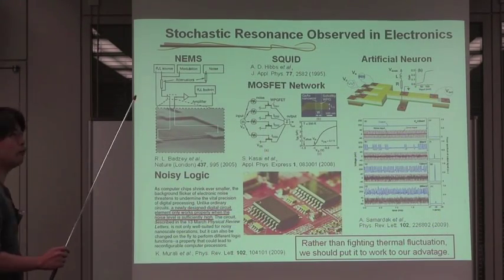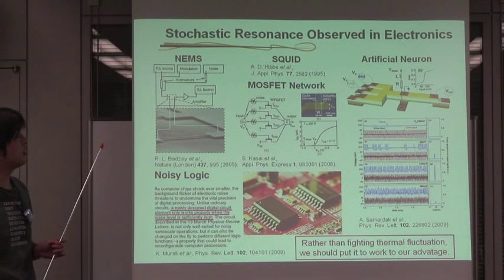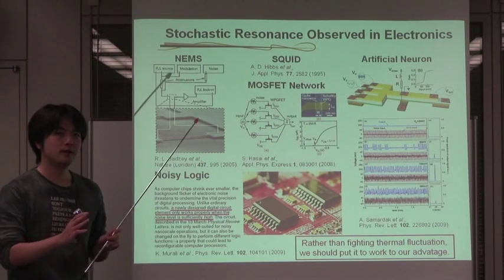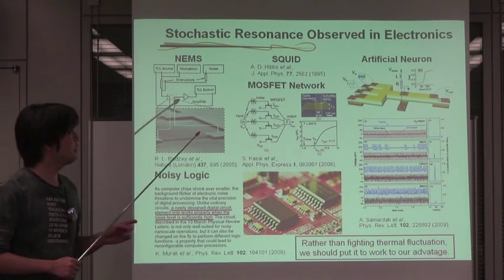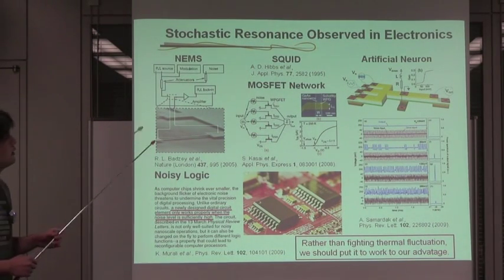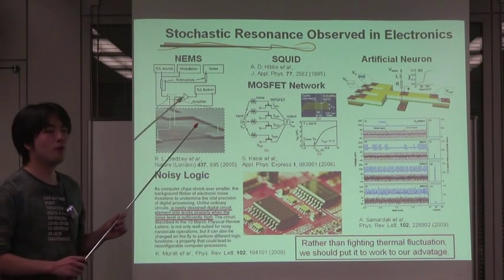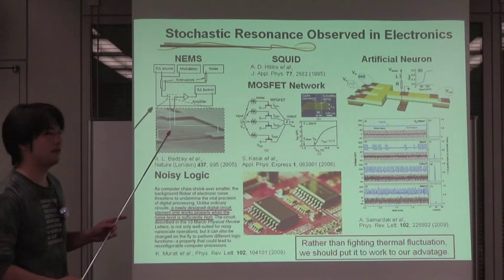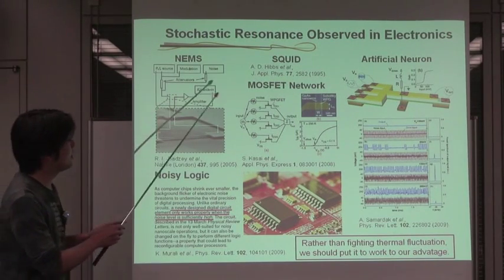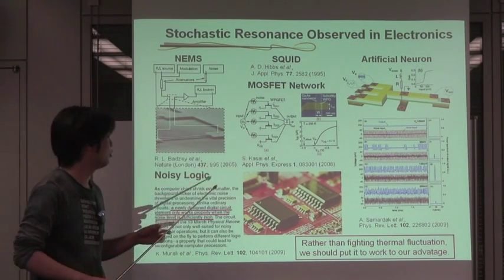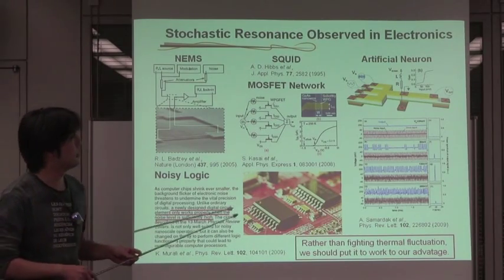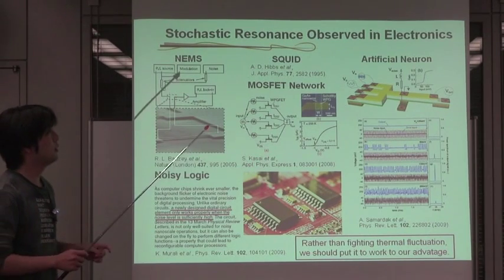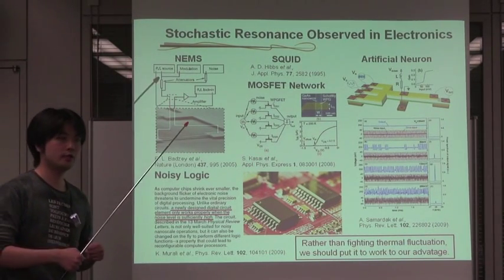The concept of stochastic resonance was originally introduced as a possible explanation for the ice age periodicity. However, this phenomenon can be commonly observed in a wide-spectral nonlinear dynamic system such as NEMS, SQUID, MOSFET networks, logic gates, and semiconductor-based artificial neurons.